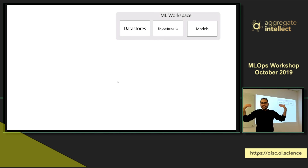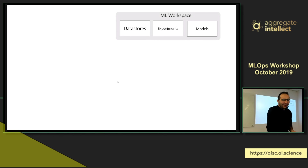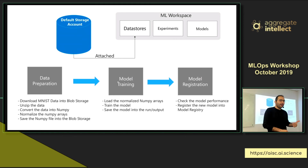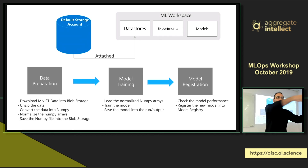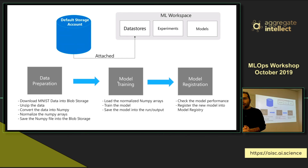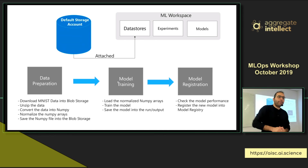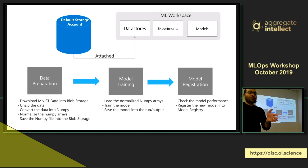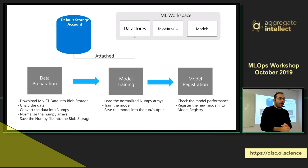In our MNIST example, we want to build a pipeline with three steps. The first step is data preparation: it downloads the data and uploads it to a shared blob storage. The second step takes the preprocessed, normalized data and trains the model. The third step registers the model into the model registry and validates whether the model beats the performance of the previous model. If it beats it, we store it; if not, we ignore it — because on day three you'll learn how to trigger a release pipeline by introducing a new model, and you don't want to introduce a model that isn't beating the previous performance.